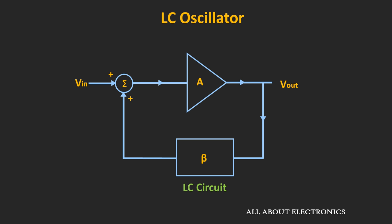In this oscillator, the LC circuit is used in the feedback path. This LC circuit oscillates at the resonant frequency, and in that way, this LC tank circuit provides frequency selectivity for the oscillator.